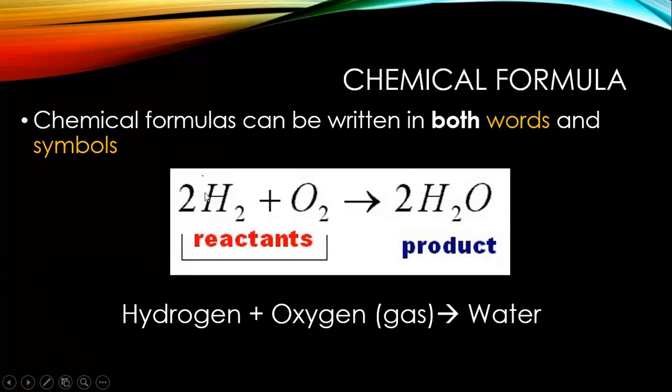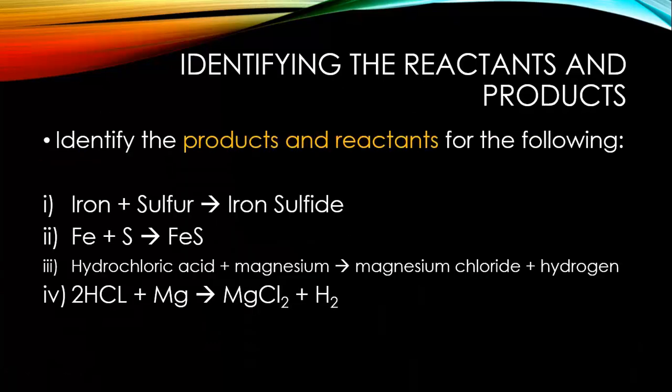When hydrogen gas reacts with oxygen gas, it produces water. So when hydrogen gas H2 reacts with oxygen gas O2, it produces water H2O. That's the product. You guys can have a go at doing this one in your own time. Identify the products and reactants of the following. Remember that reactants come first. They're two compounds, elements, or atoms that react with each other to produce a product. What I've got here is some element names and element symbols. Have a go in your own time.